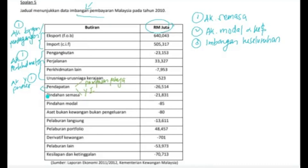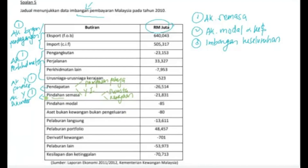Kita sambung yang seterusnya — pindahan semasa. Untuk maklumat pelajar, pindahan semasa ini merujuk akaun pendapatan sekunder. Akaun pendapatan sekunder ini juga terletak di bawah akaun semasa. Bagi akaun pindahan semasa ini pun sama, dia ada dua — kita ada pindahan swasta dan kita juga ada pindahan kerajaan.